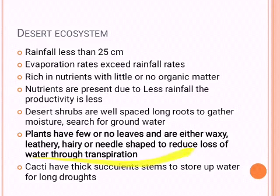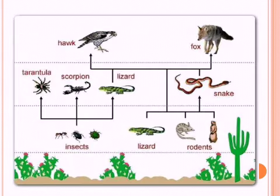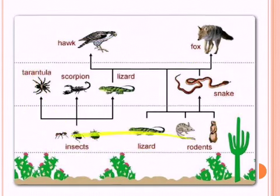This portion has been asked in previous year questions: desert plants have no leaves, or if they do have leaves, they will be waxy and hairy because transpiration loss has to be reduced. They have thick succulents called cacti plants, with thick stems to store water for long periods. Some desert animals include hawk, fox, lizards, scorpions, rodents, and insects that form the faunal biome of the desert ecosystem.